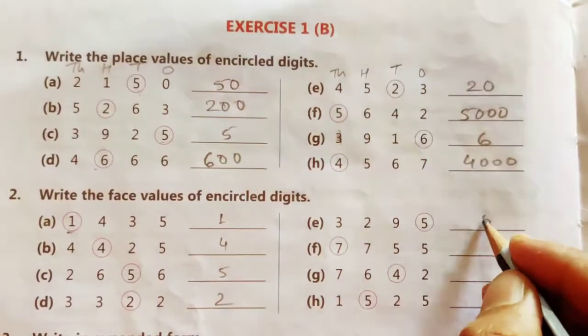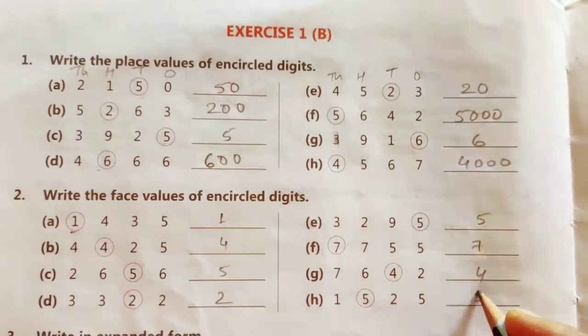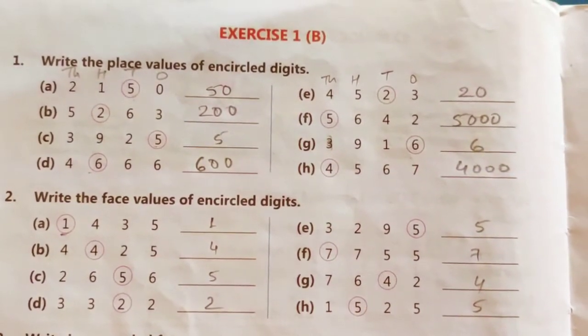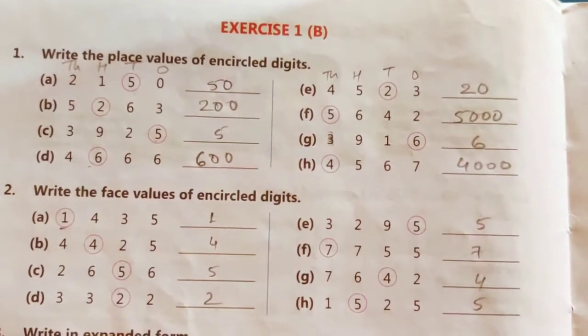And here 5, 7, 4, 5. Face value means the number itself. What is written or what is circled?